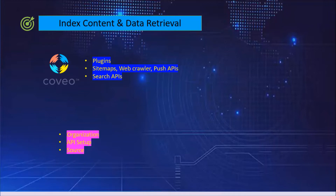For data retrieval, we have multiple options. One of the major options is the search APIs. Through the search APIs, we can invoke the Covio system and retrieve the content based on the authentication provided.